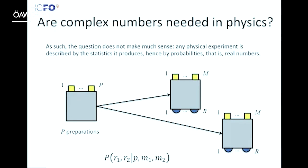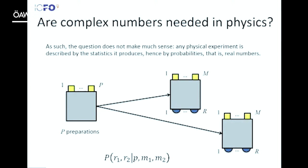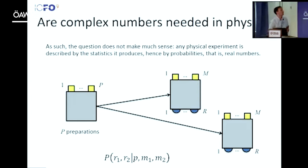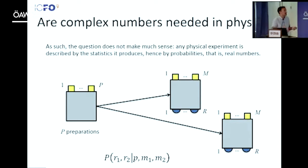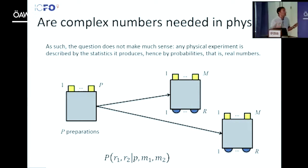Let me start by putting this question: whether we need complex numbers in physics. A first approach to this question is rather boring. Physics is an experimental discipline mostly, so you want to describe experiments. Experiments are described by the statistics you see. You have devices that prepare particles in a given state, then you make measurements on these particles and you get results.